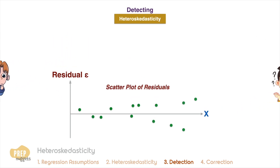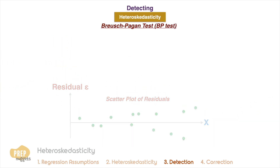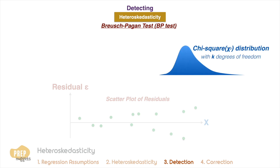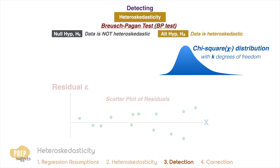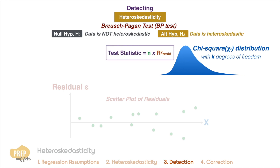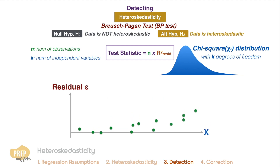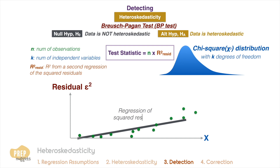The more objective method is the Breusch-Pagan test, which has a chi-square distribution with k degrees of freedom. The null hypothesis is that the data is not heteroscedastic, while the alternate is that the data is heteroscedastic. The test statistic is calculated as n times the R-squared of the residuals, where n is the number of observations and k is the number of independent variables. Do take note that the R-squared of the residuals is from the second regression of the squared residuals, not the first regression.